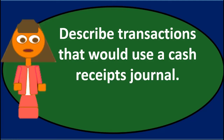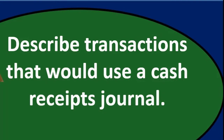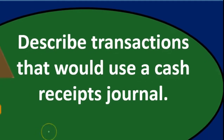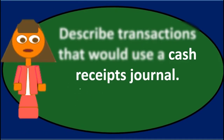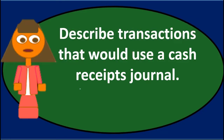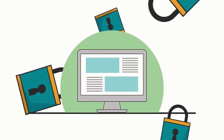In this discussion we will address the question: describe transactions that would use a cash receipts journal. When we see a discussion or essay question like this, we may first want to talk about what the cash receipts journal is and when it would be used. A cash receipts journal is typically used in a manual-based system, as opposed to an automated system that uses journals.